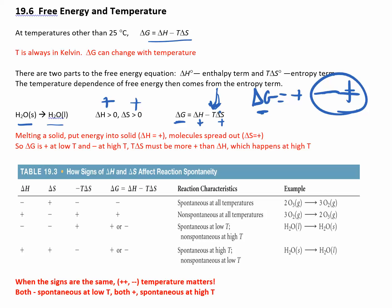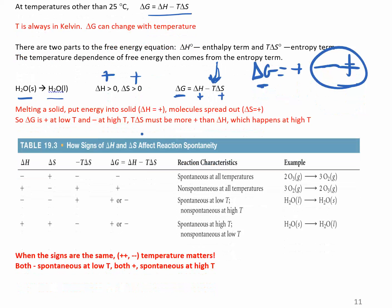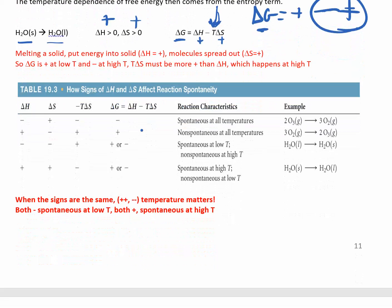Remember, temperature is in Kelvin, so it's always going to be positive. There are four cases to look at in terms of the signs of delta H and delta S. If they're both positive, this is going to be spontaneous under high temperatures.